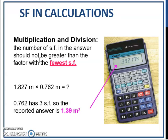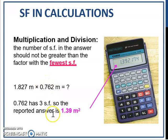Maksudnya, bila you calculate, jawapan kamu — the number of significant figures in your answer must not exceed the number of significant figures in the question. Contohnya, you have 1.827 m × 0.762 m. This one has 4 significant figures, this one has 3 significant figures. So your answer should be reported in 3 significant figures, sebab paling sikit adalah 3.